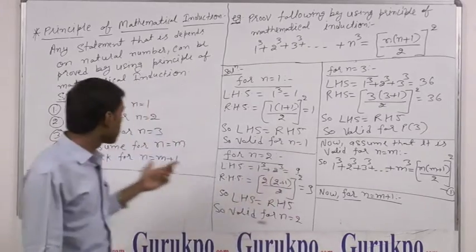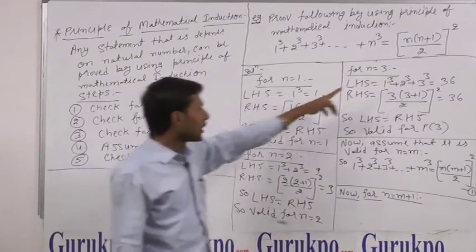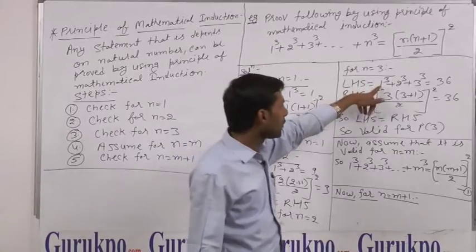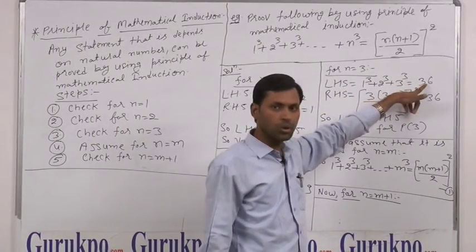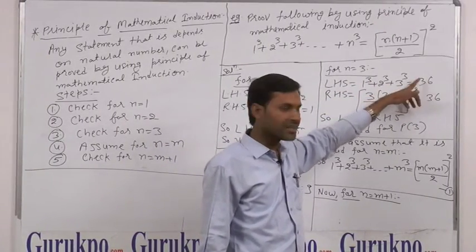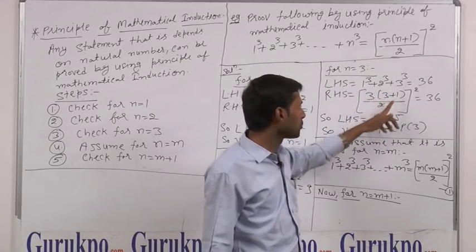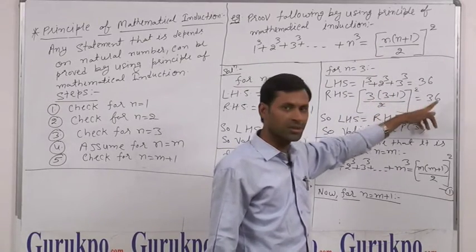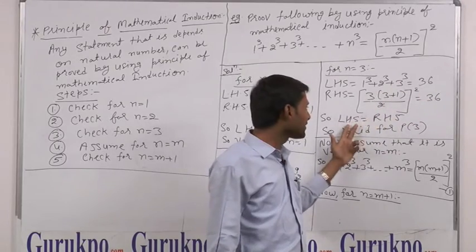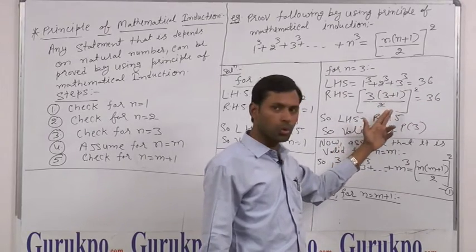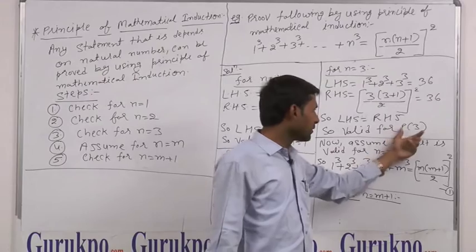Similarly, we prove it for n equal to 3. LHS: 1 cube plus 2 cube plus 3 cube is equal to 36. And RHS: 3 times (3+1)/2 whole square is equal to 36. Again, LHS is equal to RHS, so it is valid for n equal to 3.